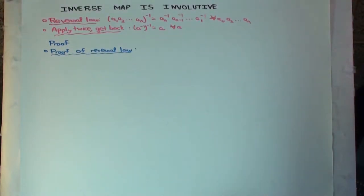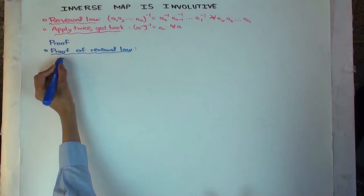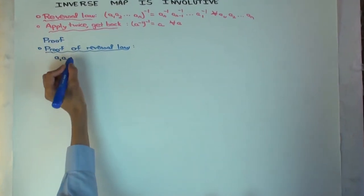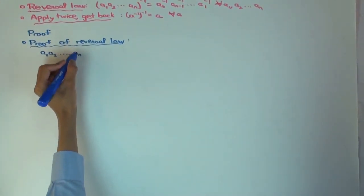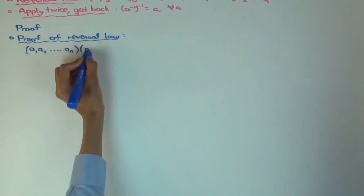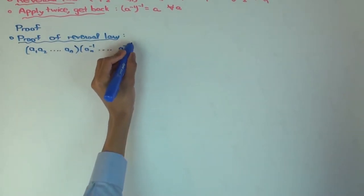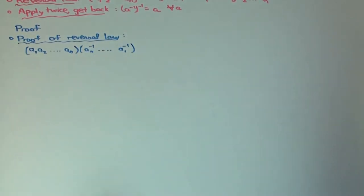So let's try to prove the reversal law first. So how would you prove it? Well, to prove that two things are inverses of each other, you just prove that when you multiply them, you get the identity. So let's multiply them, times this thing. What's this?